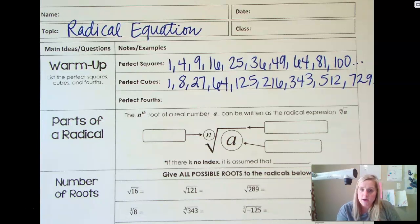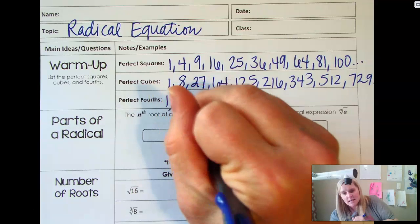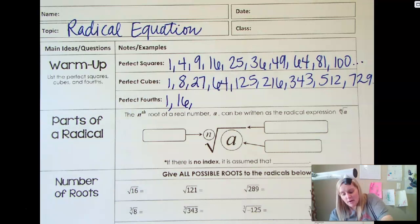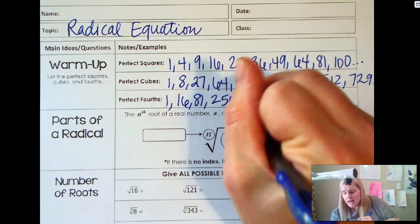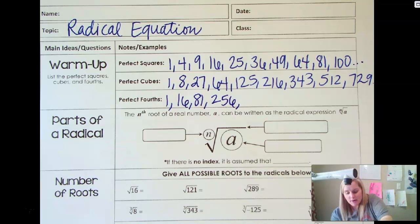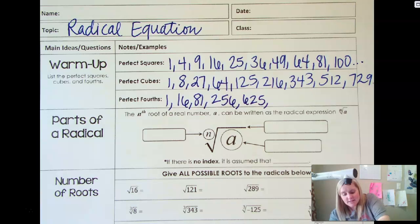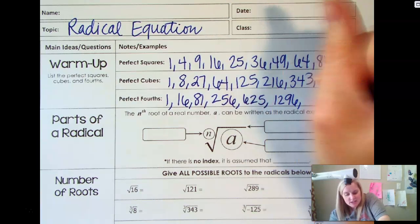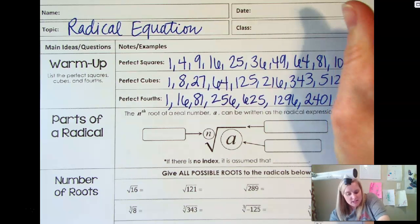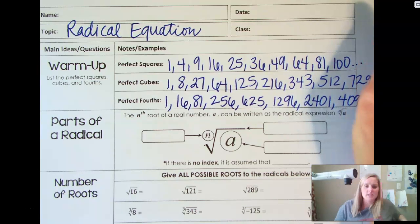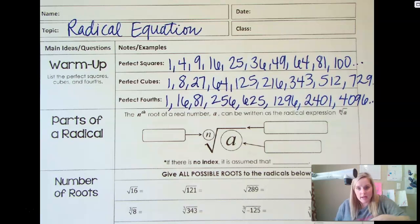Now perfect fourths — that would be 1 to the fourth power, which is 1; 2 to the fourth power is 16; 3 to the fourth power is 81; 4 to the fourth power is 256; 5 to the fourth power is 625; 6 to the fourth power is 1,296; then 2,401 and 4,096. They will continue — I don't have those memorized at all.